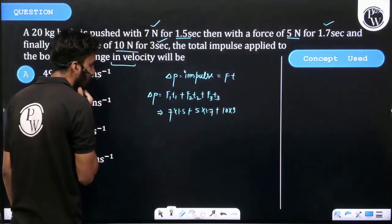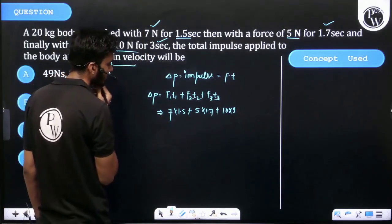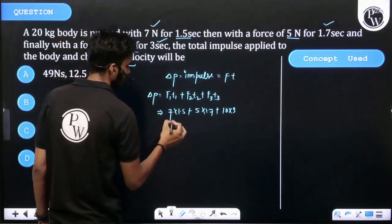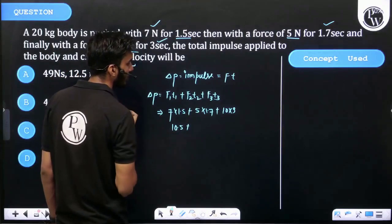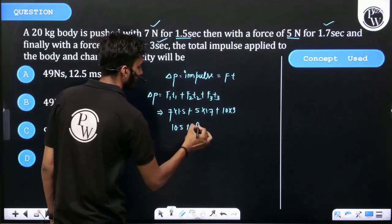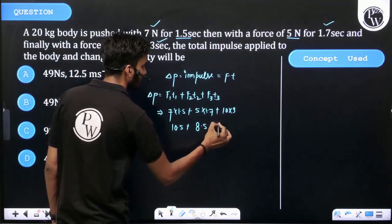Then 1.5 into 7 is 10.5, and 1.7 into 5 is 8.5, plus 30.